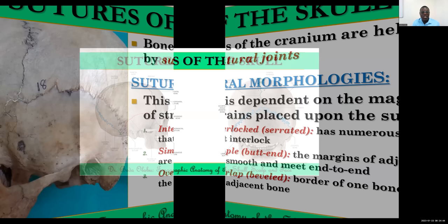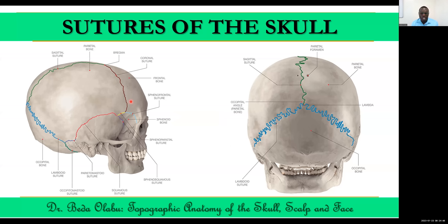Those are the different types of sutures. Take an atlas and look at the different sutures of the skull, and in the anatomy lab try to name them on the specimen. It is important to know the major sutures: the sagittal suture, the lambdoid suture, the coronal suture, and the squamosal suture. It's also important to note what we call the different points: the lambda is the junction between the lambdoid suture and the sagittal suture, and the bregma is the junction between the sagittal suture and the coronal suture.